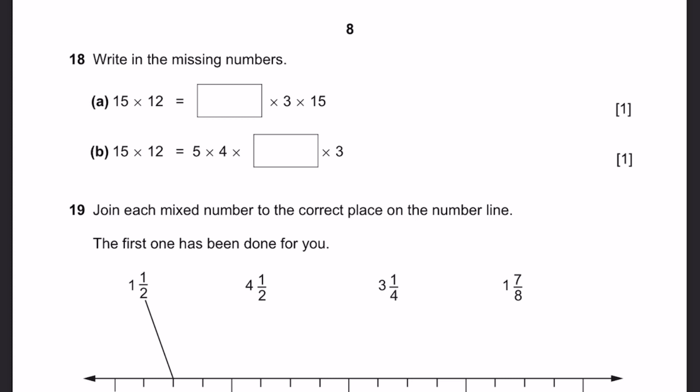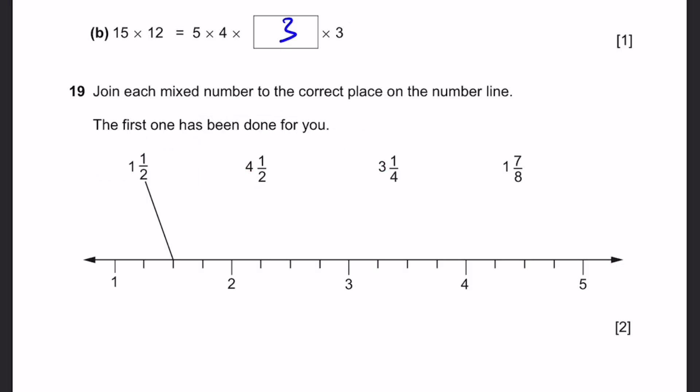Question 18. Fill in the missing numbers. Part A: 15 into 12 equals dash into 3 into 15. We can cancel the 15s. 12 equals dash into 3, so that's 4. Part B: 15 into 12 equals 5 into 4 into dash into 3. 15 is equal to 5 into 3, so we can cancel all three. 12 equals 4 into dash. This dash is 3. Question 19. Join each mixed number to the correct place on the number line. 4 and a half will be joined here. 3 and a quarter will be here. And 1 and 7/8 will be all the way here, right in the middle of 1 and 3/4 and 2.